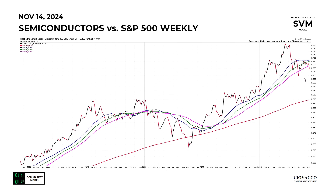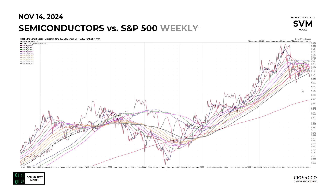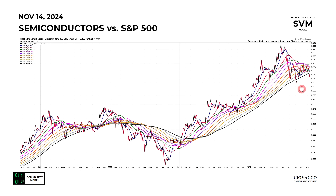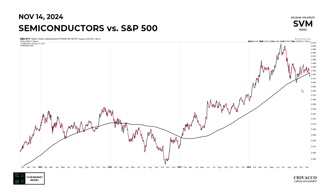Since then they've come back, and on November 14, 2024 they have a somewhat concerning relative look — something we have to keep an eye on. If we look at the same relative chart, SMH relative to SPY, on November 14th, it also has a somewhat concerning look.